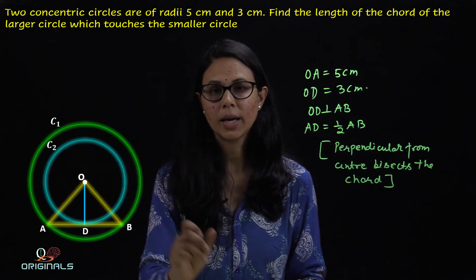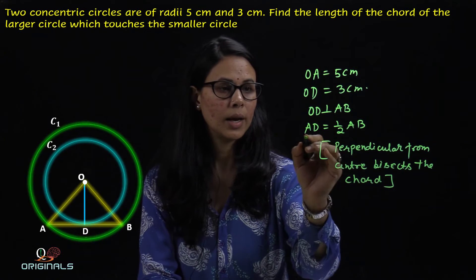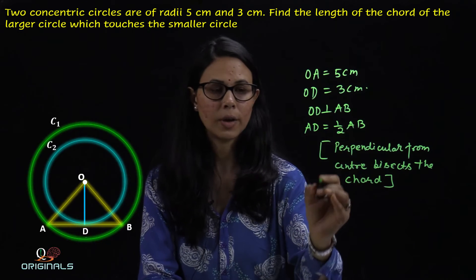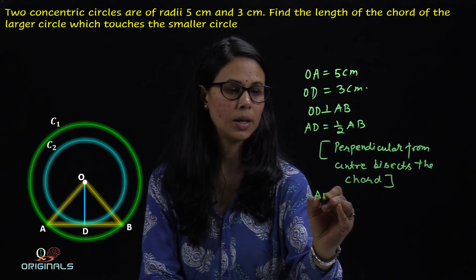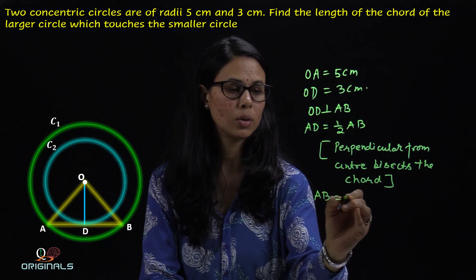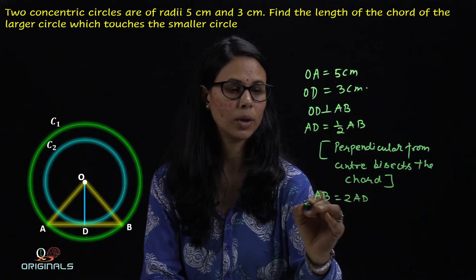AB जो है C1 की chord है, इसके लिए AD is half of AB. तो यहाँ से AB is equal to twice of AD.